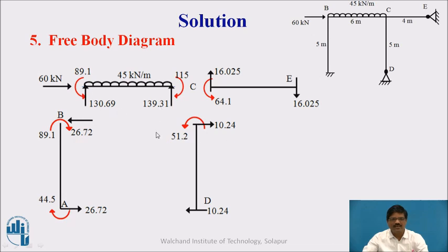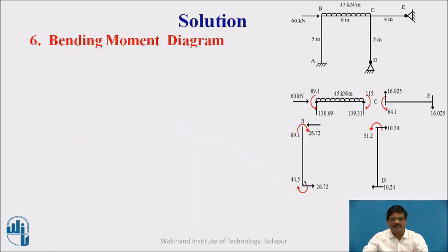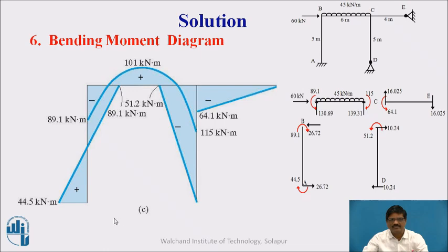With the help of this free body diagram, we have to draw the bending moment diagram. One sign convention we follow here: if the moments are producing tension outside, we take it as negative. If the moments are producing tension inside, we take it as a positive moment. At A the moment is creating tension inside, therefore it is a positive moment, 44.5. Here the moment is creating tension outside, therefore it is taken as negative.